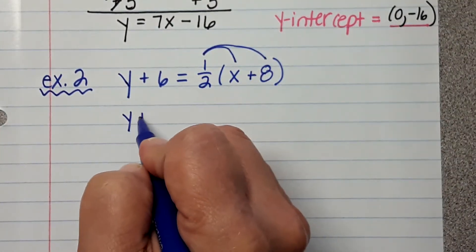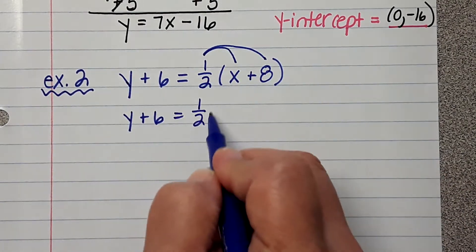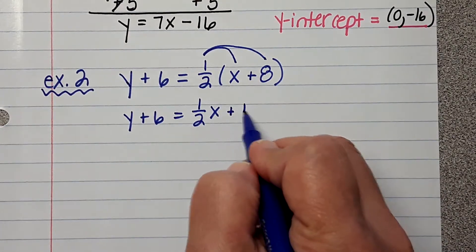So, Y plus 6 stays the same. You guys, 1 half times X is 1 half X. 1 half times 8 is 4.